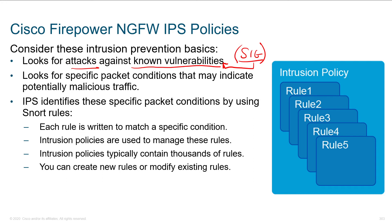We're looking for specific packet conditions that may indicate potentially malicious traffic. Some of them are easy — if I saw traffic coming from 10.5.5.5 on port 80 destined for 10.5.5.5 on port 80, that's not logical. This is that old classic LAND attack. It would crash certain systems because they got a packet sent to you by you and you'd just crash. So that's an easy way to say, hey firewall, when you see packets like this — source and destination IP address and port number match — it's a condition. Each rule that we write is written to match a specific condition. Intrusion policies are then used to manage the rules and typically contain thousands of rules. You can create new rules or modify existing ones.